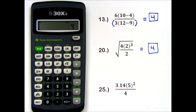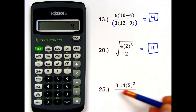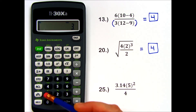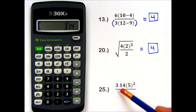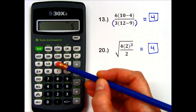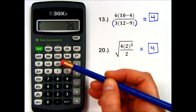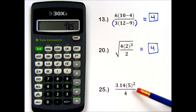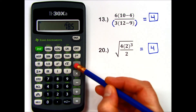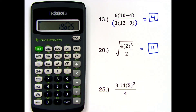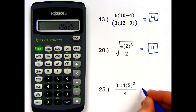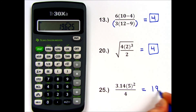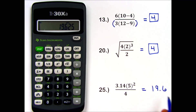Lastly, number 25: I have 3.14 times 5 squared. I'm going to use my squared key — 5 squared. When I press equals, I have my entire numerator, and then I will divide by 4, press equals, and then I have my answer: 19.6, rounded to the nearest tenth.